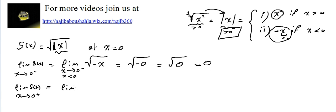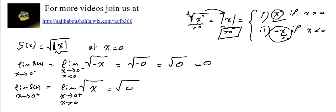And the limit of f of x, which is radical absolute value of x, as x approaches 0 plus — 0 plus means x is above 0 — so the absolute value is directly x. What we have here is equal to radical 0, which is also equal to 0.